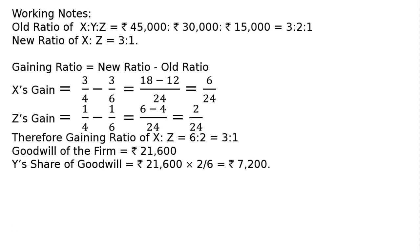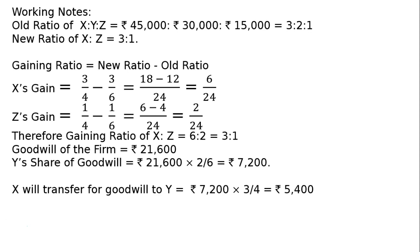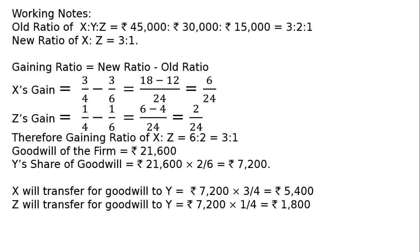This 7,200 is Y's sacrifice — the gain of X and Z. Y's capital account will be credited. X and Z's capital accounts will be debited. In ratio 3:1, X gives 5,400 and Z gives 1,800.